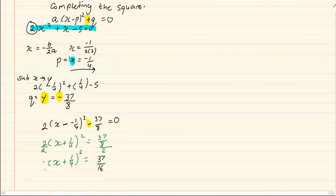Then we square root both sides, giving us x plus a quarter is equal to negative root of 37 over 16 and x plus a quarter is equal to positive root of 37 over 16.